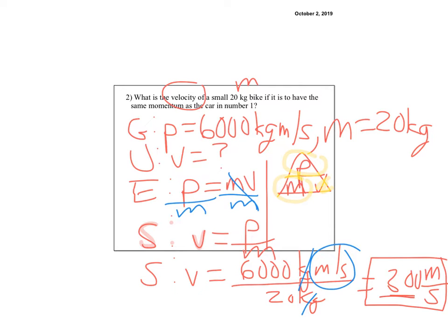That's because it's a different mass. 20 kilograms. The bike was 20. Remember that? The bike was moving, we found, at 300 meters per second. So that's where this question comes from.